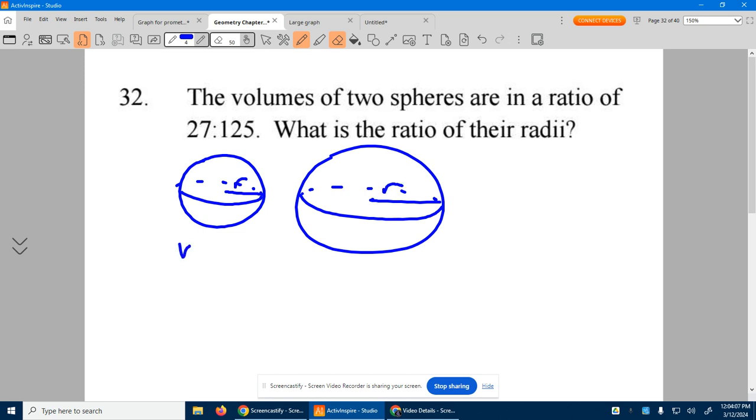Now, we do know that after we did four-thirds pi radius cubed, the ratio is 27 to 125.